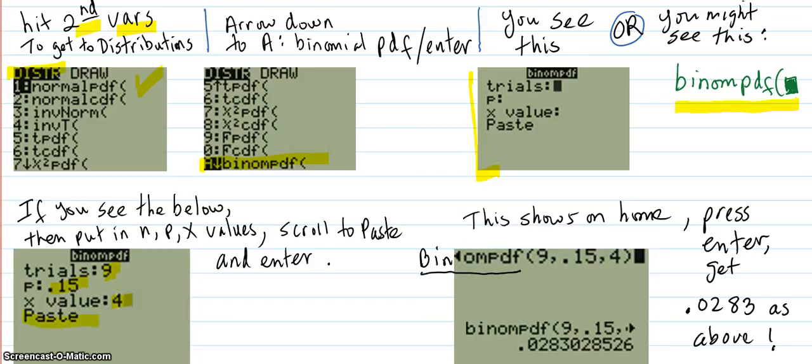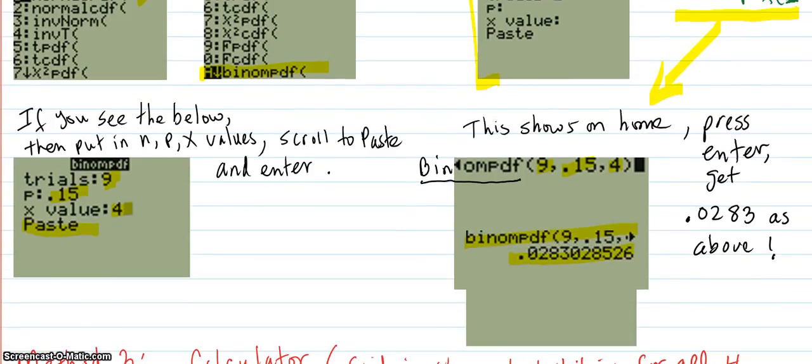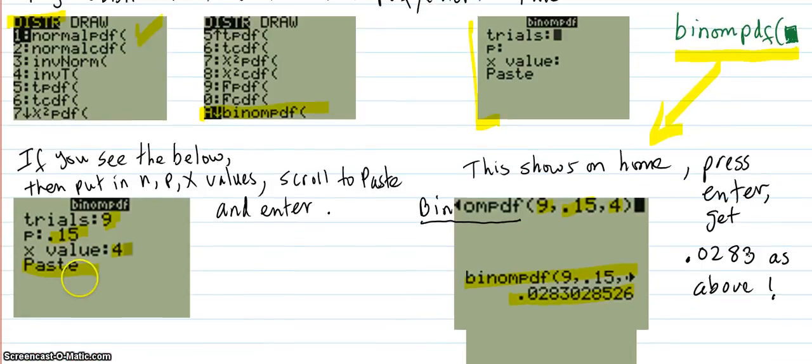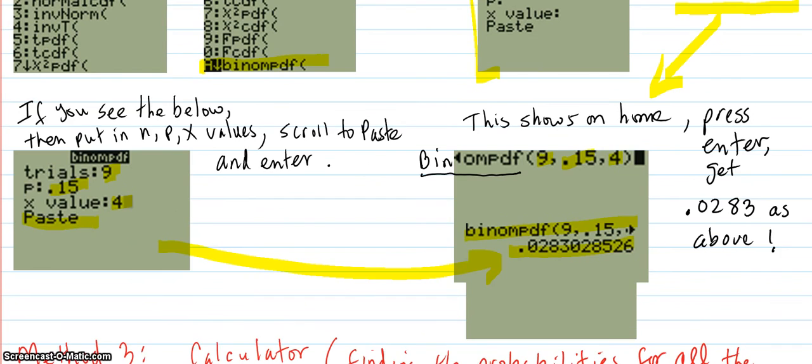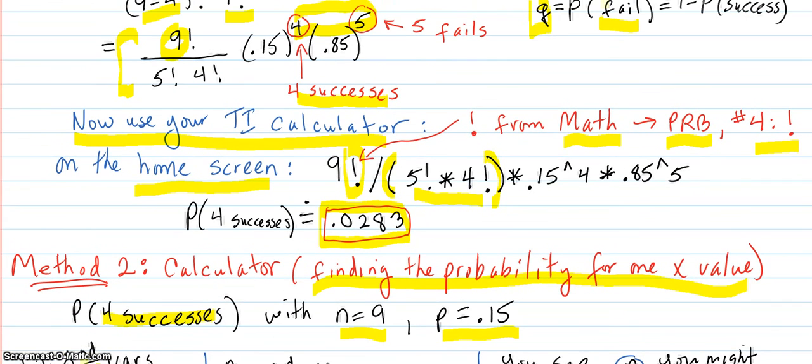You scroll down to paste and enter. This other way, you're already on the home screen, and you put in your nine comma, the .15 comma, the success number that you're looking for, which is four. Close parentheses. And when you enter that, you're going to see this, you're going to see the .0283, which is the same. When you enter this one, when you paste that, you're also going to see both of those. You're going to see this .0283. So either way, you get the same answer. And that matches up to what we had before, which is .0283.